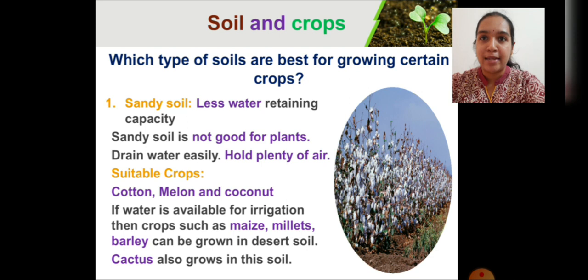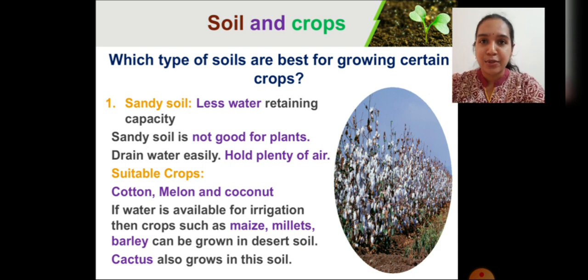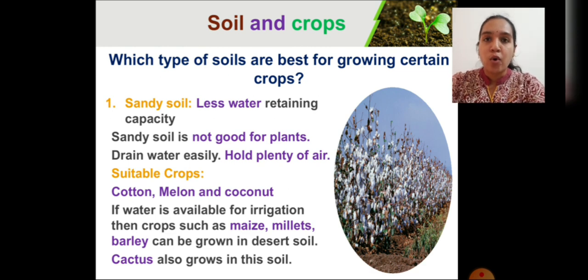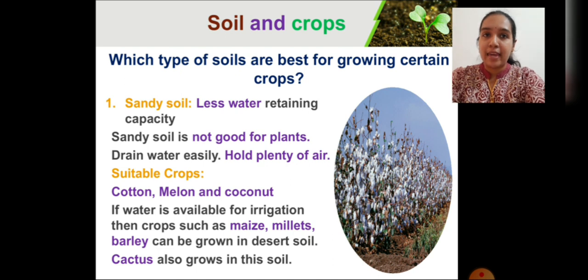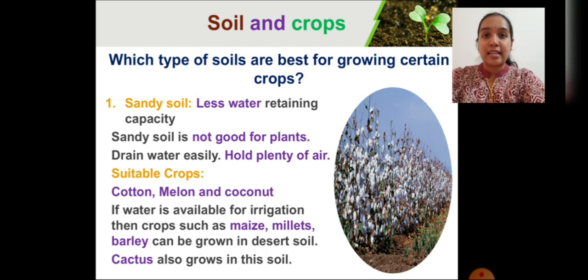Here we have a list of types of soils and the suitable crops that can grow in each soil. First, let's see the crops that grow in sandy soil. Sandy soil has less absorption capacity of water and holds plenty of air. So only crops like cotton, melon, and coconut can be grown in sandy soils. If some amount of water is available, certain crops like maize, millet, and barley can also be grown in sandy soil. The famous plant that grows in deserts is the cactus.